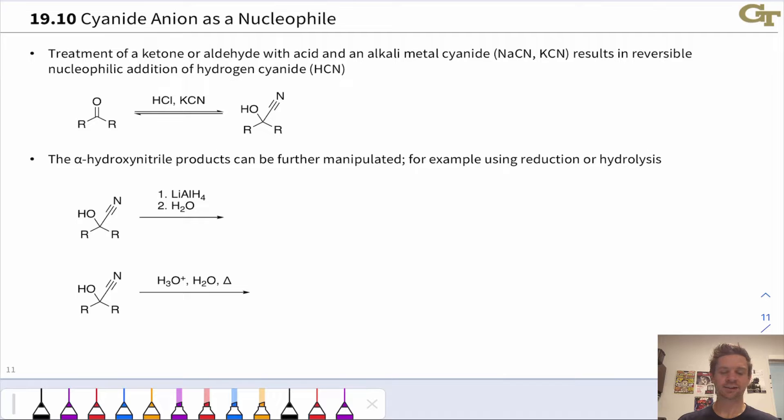If we treat a ketone or aldehyde with acid and an alkali metal cyanide like this, we get reversible nucleophilic addition of the cyanide anion, which is a pretty stable anion and a pretty weak nucleophile as a result. But we can drive this reaction to products, for example, by using an excess of cyanide.